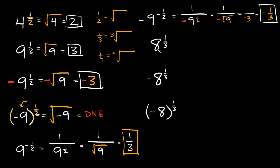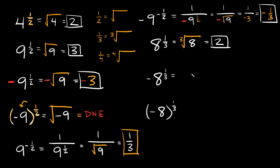Now here we have 8 raised to the one-third power. Since there's a 3 in the denominator, this is the same as taking the cube root of 8, which equals 2. So 8^(1/3) = 2. For negative 8 raised to the one-third power, the negative sign is not in parentheses, so the exponent only applies to the 8. The cube root of 8 is 2, and you carry the negative sign over, giving you negative 2.